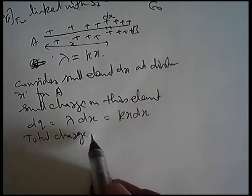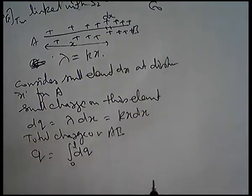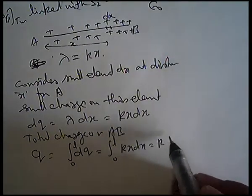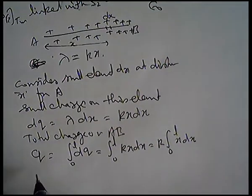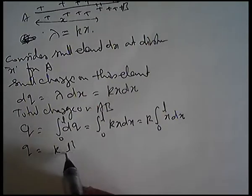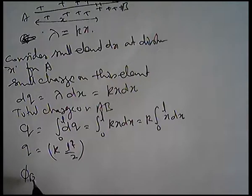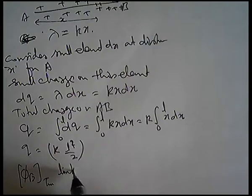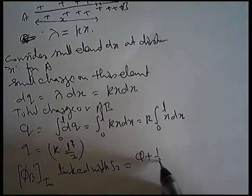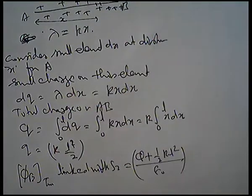Total charge on AB: Q equals integration of dQ from 0 to L, where L is the length of AB. So Q equals k times integral of x dx from 0 to L, which gives kL²/2. Therefore, flux linked with S2 equals Q plus kL²/2, divided by epsilon 0. यह total flux linked with S2 है.